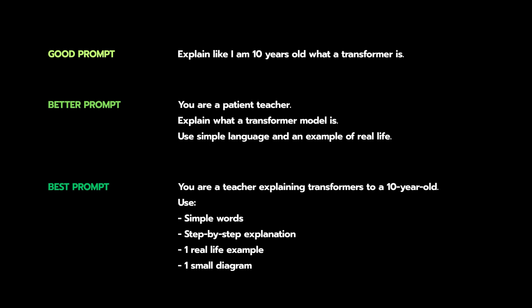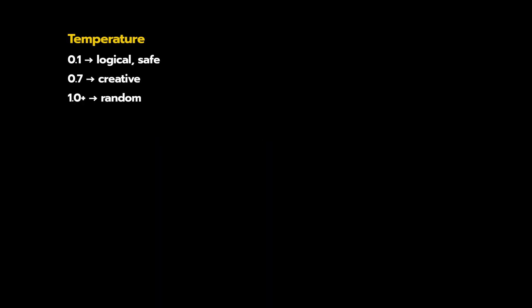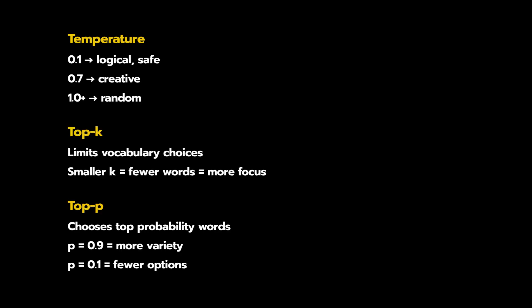Controlling model behavior: we can tweak properties like temperature — 0.1 gives logical safe output, slightly higher gives creative output, very high gives random output. Top-k limits vocabulary choices — a smaller k value gives fewer but more focused words; a higher k value gives more words but less focused. Top-p: a value closer to 1 gives more variety in the answer, while a value closer to 0 gives fewer options.